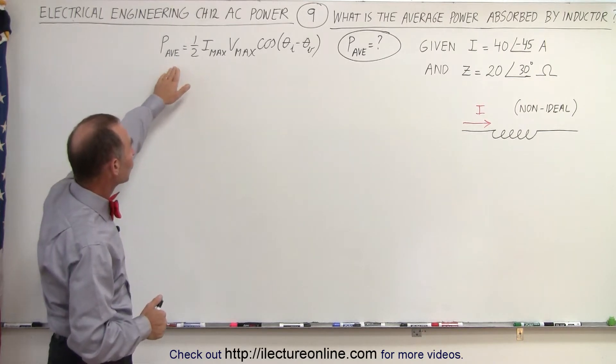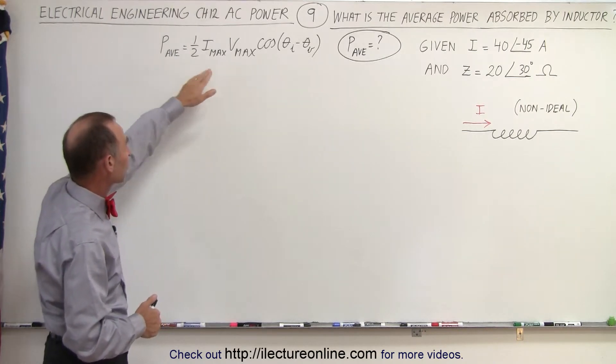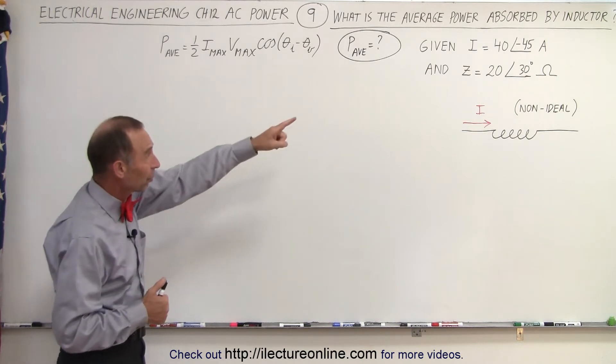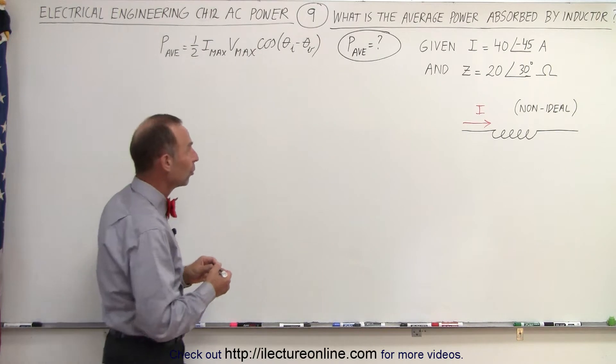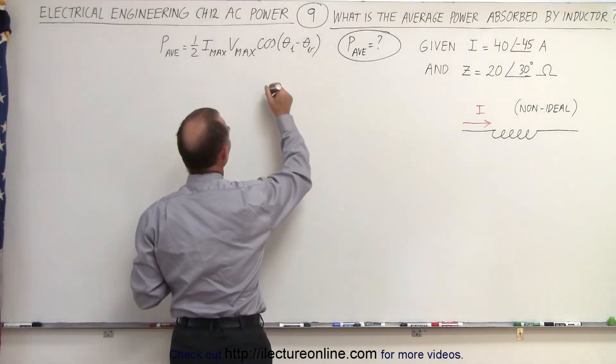We're going to use this equation right here, the average power is defined by that. That means, even though we're given the current, we will first need to find the voltage. And using Ohm's law, we know that I equals V over Z.